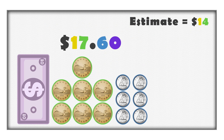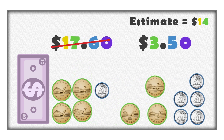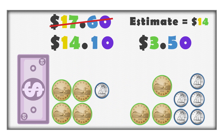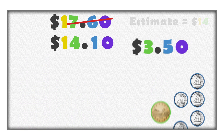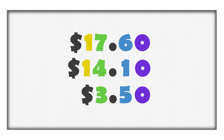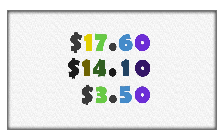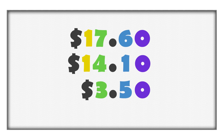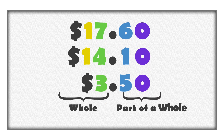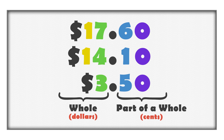When you take the coins you need for bus money, you have $14.10 left. All of these numbers — $3.50, $17.60, and $14.10 — are decimals. Decimals are numbers made up of a whole and part of a whole. In this case, the whole is dollars, and the part of a whole is cents. A decimal point separates the whole and the part of a whole.